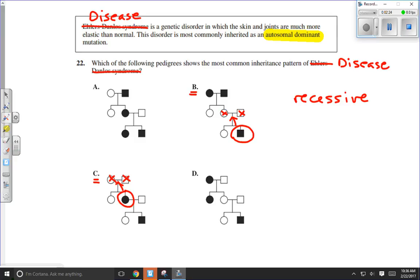In D, I can see the same thing. I have an individual right here, that individual, neither parent has the trait. Therefore, that's a recessive pedigree chart. So three out of four of these are recessive.